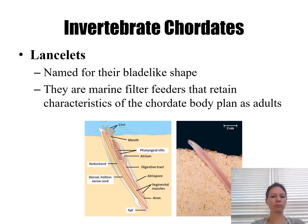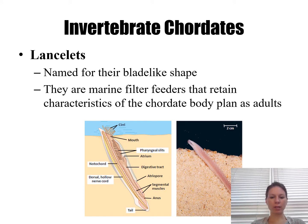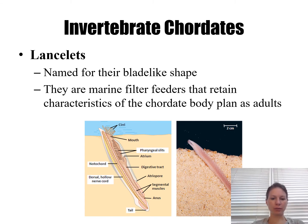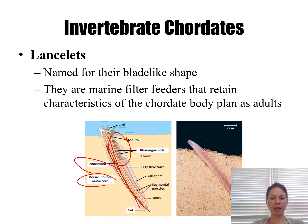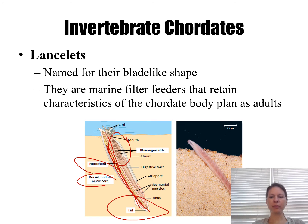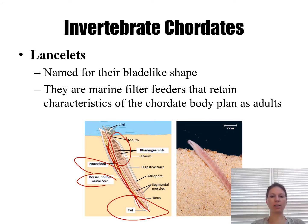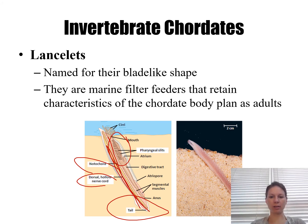Lancelets wedge themselves in the sand in the ocean and filter feed. You can see they have pharyngeal slits, a notochord, and a nerve cord running the length of the body. They also have a post-anal tail. They are the simplest of all chordates.